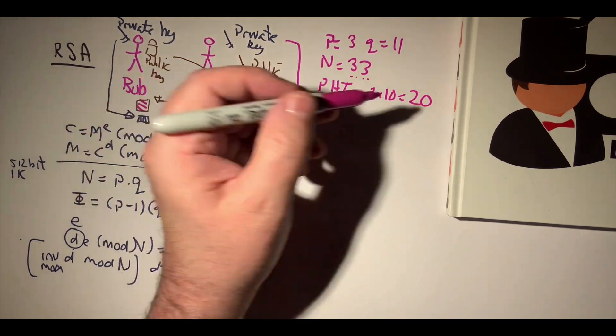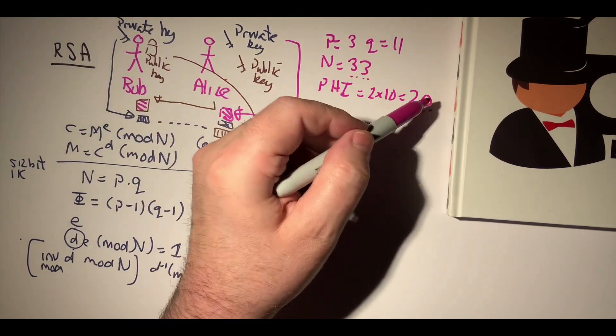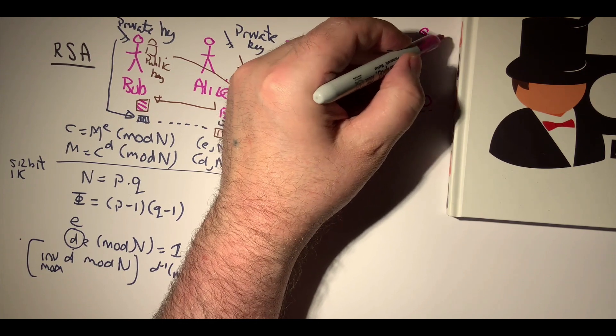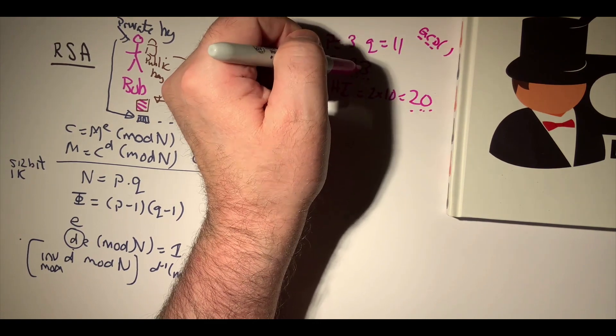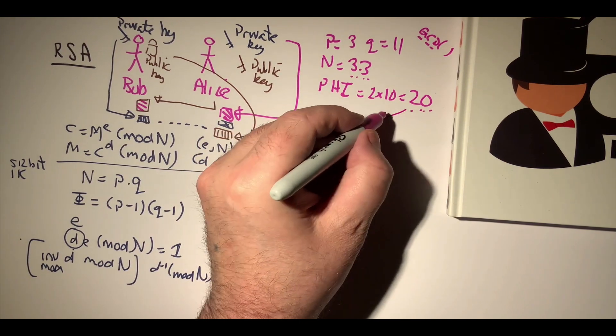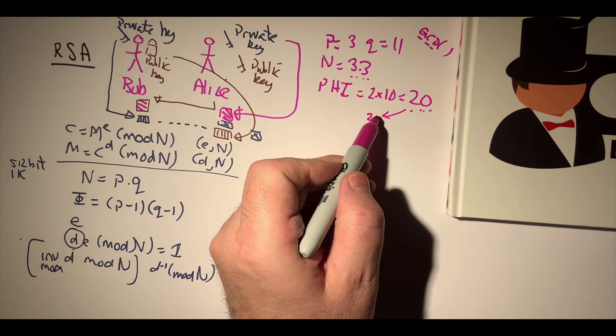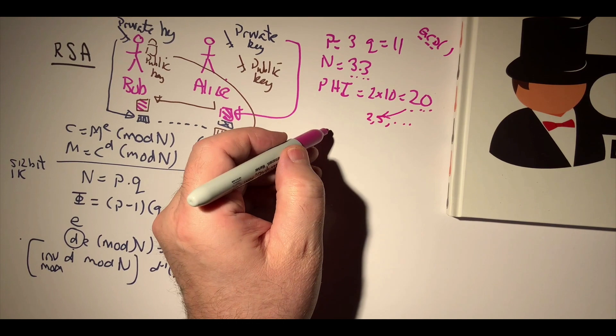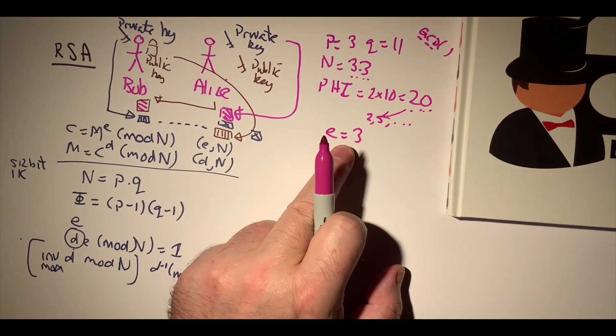Now we must make sure that there is no common factor between e and phi. It's often known as GCD, or greatest common denominator, of this value and this value is equal to 1. We'll do it manually, so the factors in here are 2, obviously 4, 5, and so on. So let's pick a value of 3 because 3 is not a factor of phi.